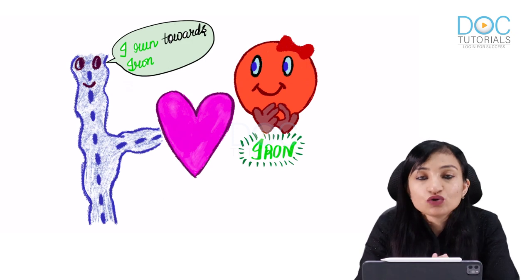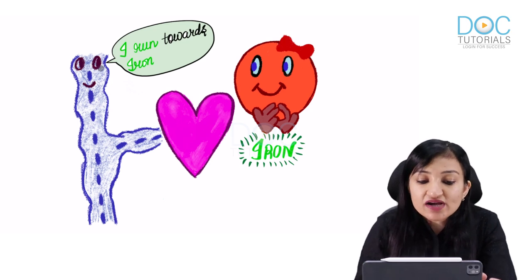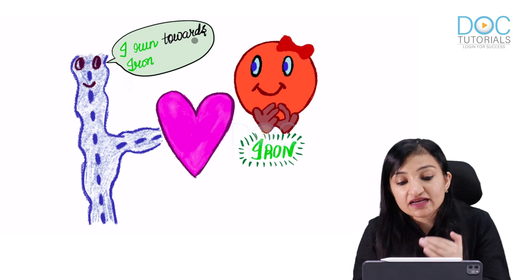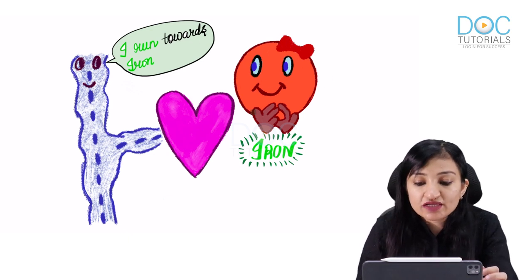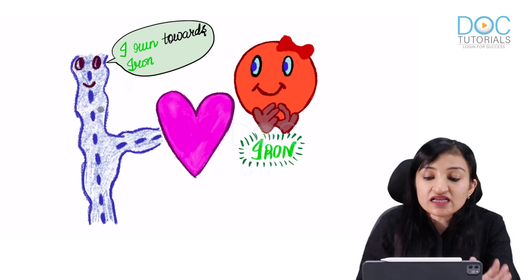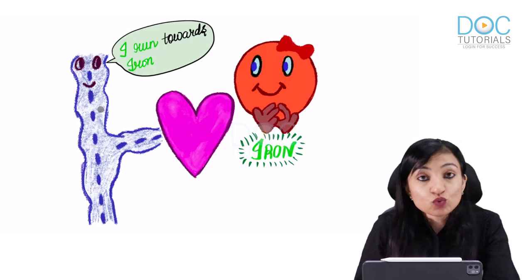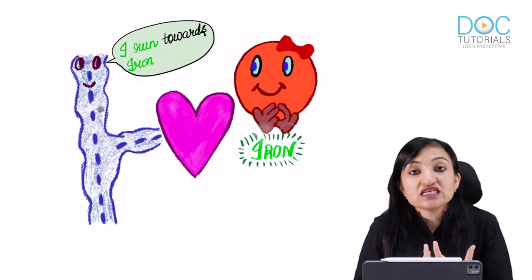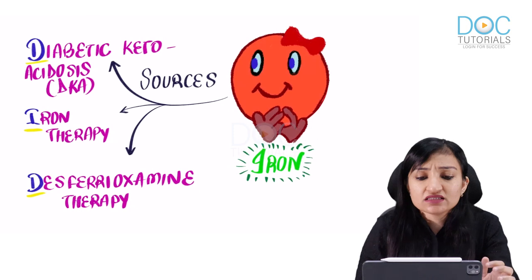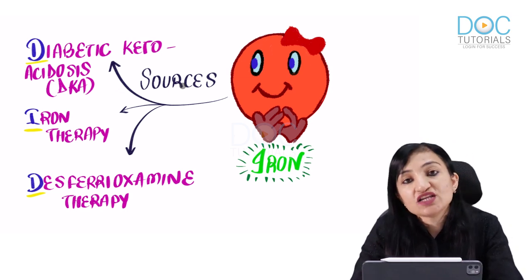These aseptate filamentous fungi have a tendency to run towards iron — iron is an important growth factor. Iron can be obtained from sources — remember DID: Diabetic Ketoacidosis, Iron therapy, and Desferrioxamine therapy.